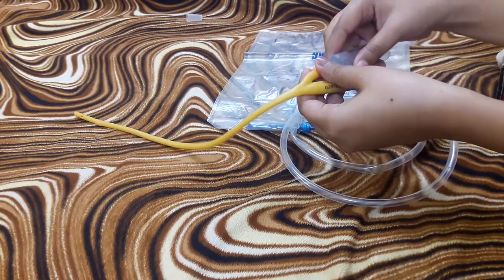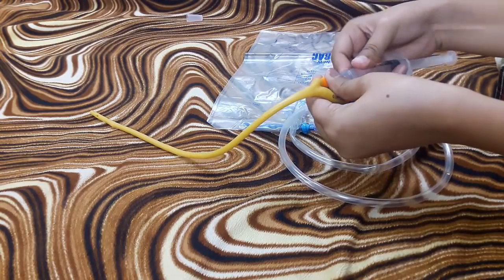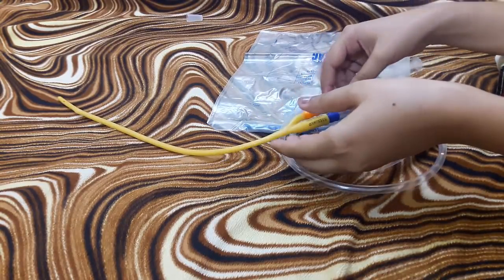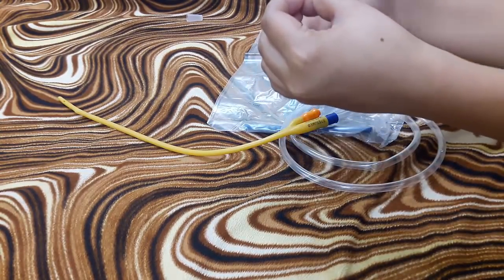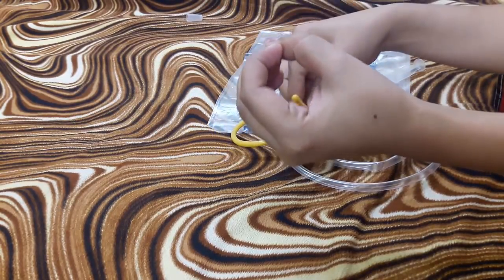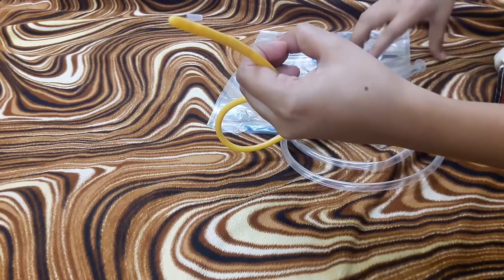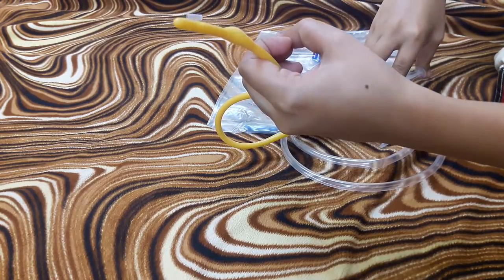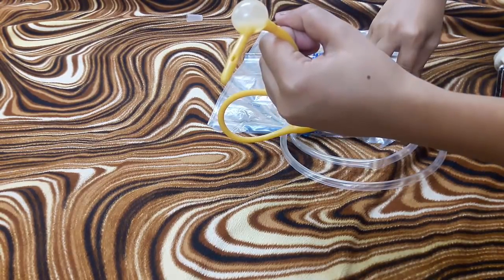Now imagine over here is the bladder and below it the urethra. We will insert the catheter into the urethra up to the bladder, and now we will instill normal saline into it. You can see the balloon is inflating.